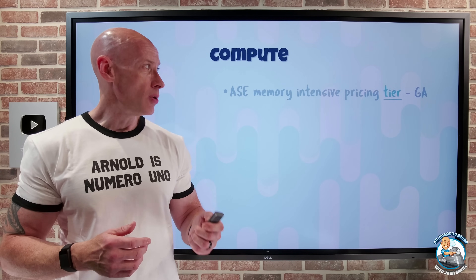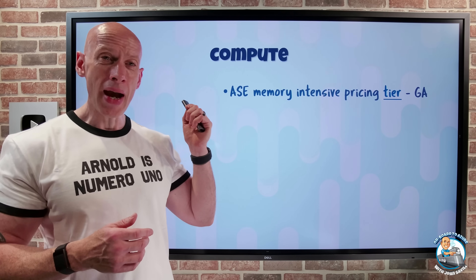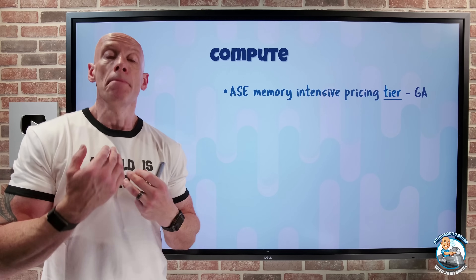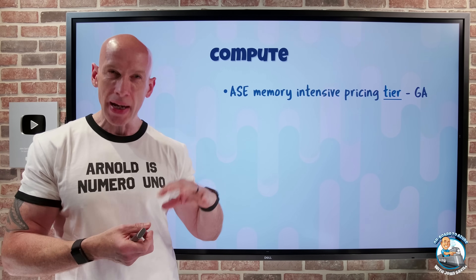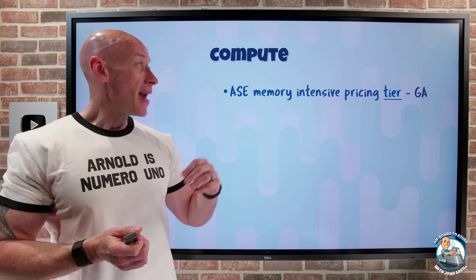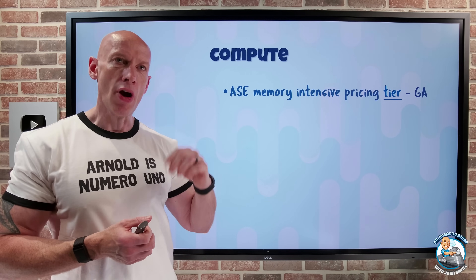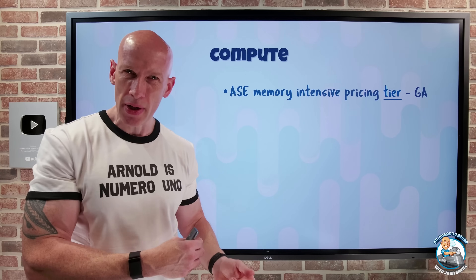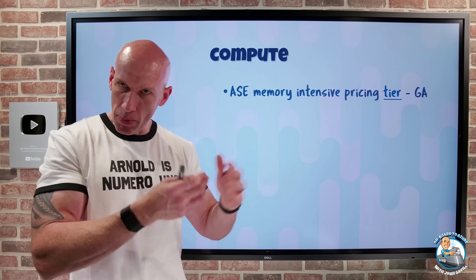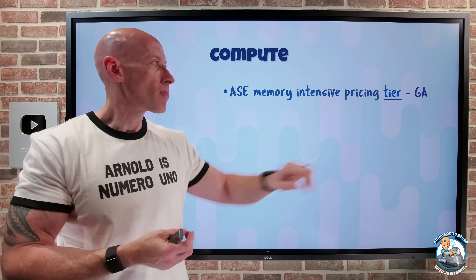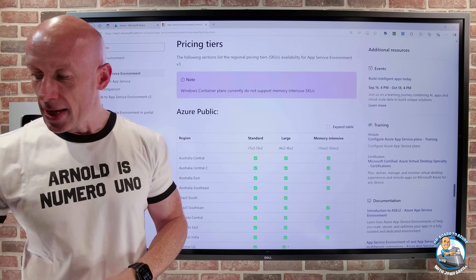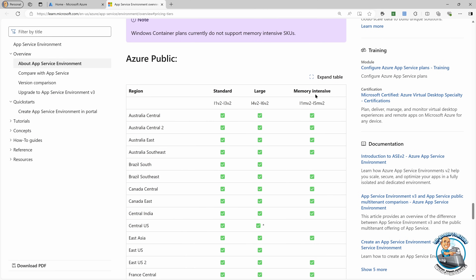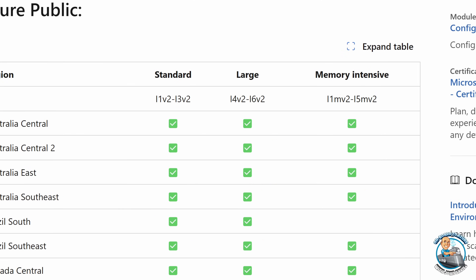On to what's new on the compute side. For App Service Environments — remember, that's where it's all dedicated to your particular instance, no shared infrastructure like regular App Service plans — they now have a memory intensive pricing tier. Remember, different workloads have different requirements: some are more CPU focused, some are more memory focused, some are more of a general mix. So now you have the ability to pick this memory intensive type SKU.